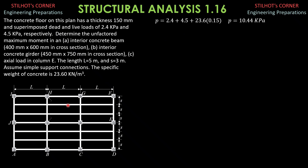The tributary area of the interior beam would look like a trapezoid. For the interior girder, we have three triangular loads plus the reaction at the end of the interior beams, times 2 because we have two interior beams at that interior girder. The trapezoidal loading weight is pressure times S — that's 10.44 times 3 — which equals 31.32 kilonewtons per meter.